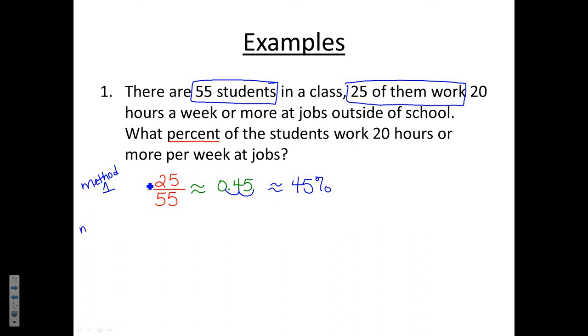Now let's look at method two. The other option would be to take the same 25 out of 55 students and set up a proportion. And remember because we're talking about a percent it's going to be something which I don't know out of 100. To solve this we just cross multiply.